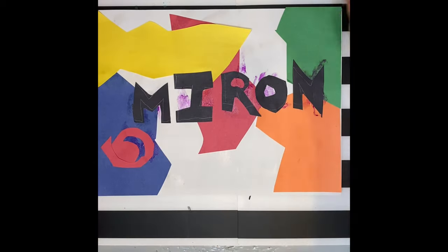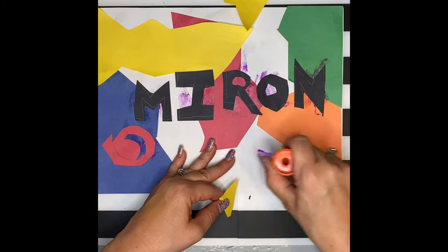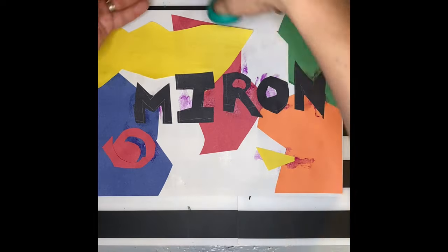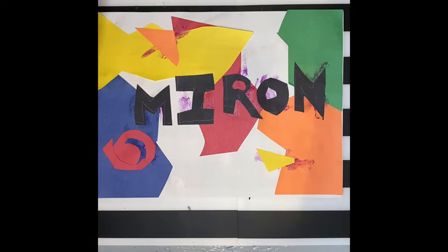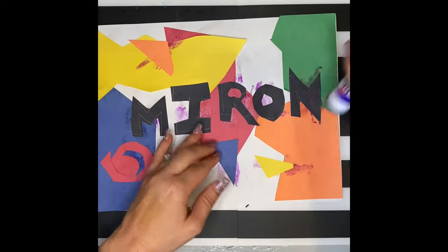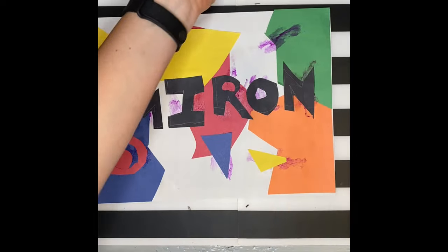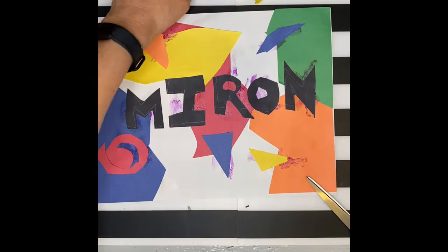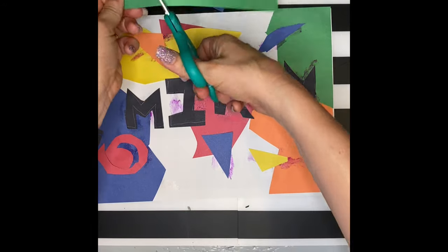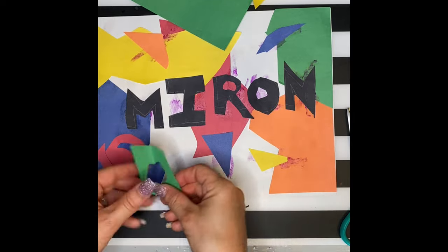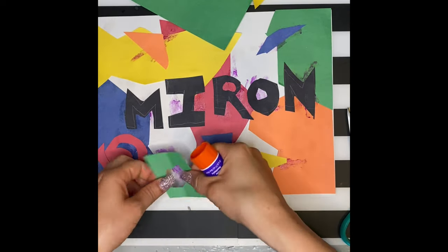As I glue down my smaller shapes, I want to pick colors that are opposite of each other. For example, if I cut out a yellow piece of paper, I probably shouldn't glue it on the yellow section, as you wouldn't be able to see it very well. So try to pick contrasting colors. Remember, the contrast in art is important as it attracts the viewer to your artwork. I'm trying to make my shapes kind of point towards my name so that you can see it better. This helps draw the attention to the viewer to the middle of the picture.